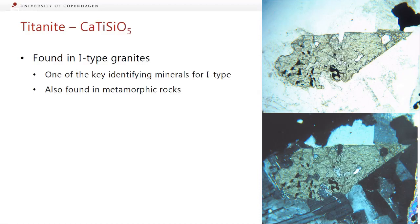Titanite is one of the key minerals for identifying I-type granites. You can also find it in metamorphic rocks, and it has that distinctive wedge shape. It's a weird mineral — a calcium-titanium silicate.